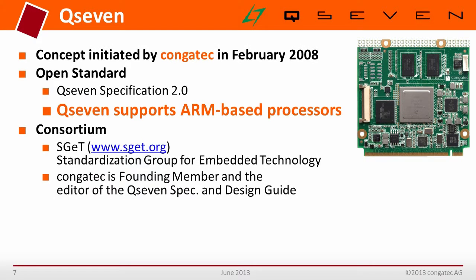Q7 is a standard which has been in place already for a couple of years. It was initiated by Congatec and some other key players in the market back in February 2008. It is an open standard. In the meanwhile, we reached revision 2.0, and this revision also allows support for ARM-based processors. Q7 is now fully exchangeable, so Q7 products on x86 or ARM-based processors are possible. From now on, the Q7 specification is hosted by a new independent consortium called SGET, and you will find all the details on the SGET.org page.